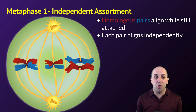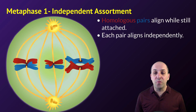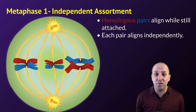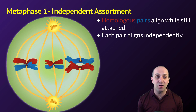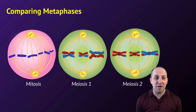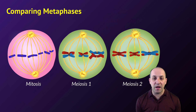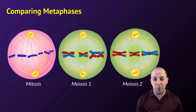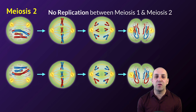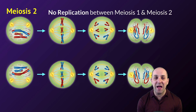The next unique event during meiosis that we're going to focus on happens during metaphase 1. During metaphase 1, the homologous pairs of chromosomes align at the middle of the cell — the metaphase plate — while still attached to each other from the crossing over process. Independent assortment refers to the fact that each pair of chromosomes aligns independently of each other pair. In this example with three sets of homologous pairs, there are eight different, equally likely arrangements that could happen during metaphase. Notice that it's only in meiosis 1 where chromosomes align at the metaphase plate still attached to their homologous pairs. In metaphase of mitosis and in metaphase of meiosis 2, chromosomes align individually, or in single file. There is also no replication of DNA between meiosis 1 and meiosis 2, which is absolutely crucial in order to produce haploid gametes at the end of meiosis 2, each with half of the normal amount of DNA.